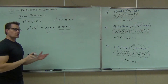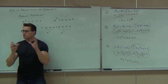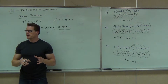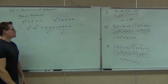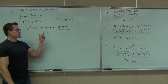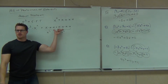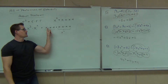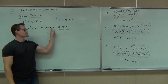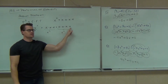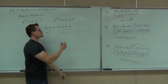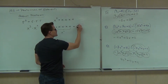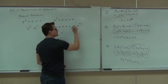Do I need parentheses? No, not really. I don't need them because I'm just multiplying here and multiplication is commutative and associative — it doesn't matter how we group them. x times x times x times x times x times x times x — how many x's do you have? You have seven x's. So this is really x to the 7th.